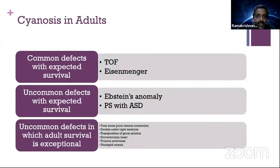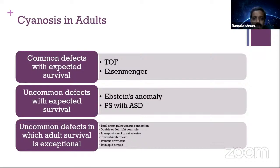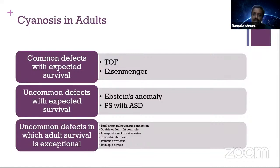You can approach cyanosis in adults in this fashion: common defects with expected survival, uncommon defects with expected survival, and uncommon defects where adult survival is exceptional. The two most common things are TOF and Eisenmenger syndrome. Uncommon defects with expected survival are Epstein's anomaly and PS with ASD. Conditions like transposition, univentricular heart, truncus arteriosus, tricuspid atresia, and TAPVC are very uncommon, with exceptional adult survival.